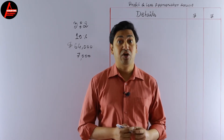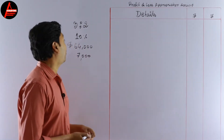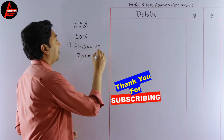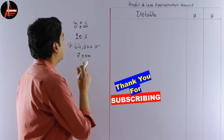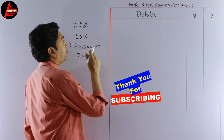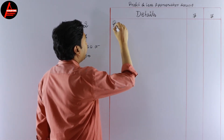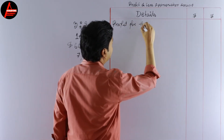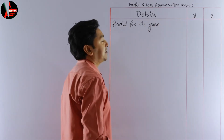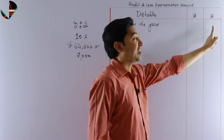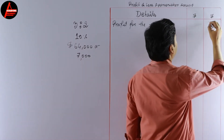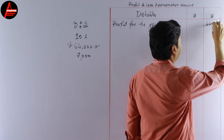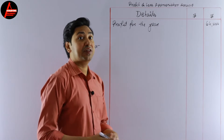First, we record the profit for the business, which is $64,000. So let us write here: Profit for the year — $64,000 in the last column. We will record all the incomes first, then subtract all the expenses.